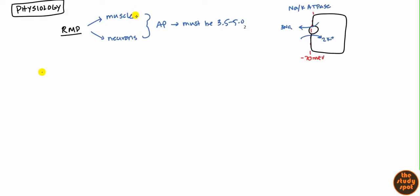If the potassium isn't in that range, you will have derangements in these cells. For example, your heart is a muscle — the cardiac muscle — so you'll start seeing changes in the heart muscle, and muscles in general become weaker. Because of this great importance, the body has adapted ways where it can quickly change the potassium level in the blood when needed.